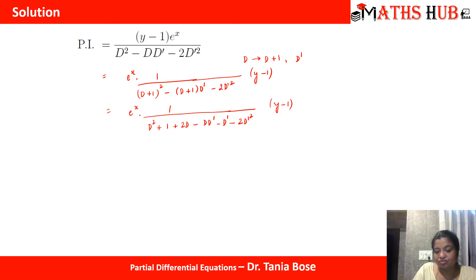You can see that there is no power of x but the main target is that we shift the denominator to the numerator with a negative sign and we try to make it in the form of a binomial. It is necessary that the leading term should always be 1. In this expression we already have a 1 here. We can take this term in the numerator and write it as 1 plus. I am separating this 1 and writing the rest of the terms as it is: (2d minus d d dash minus d dash minus 2 d dash square) raised to power minus 1 into (y minus 1).